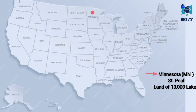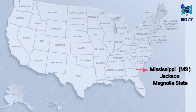Next state is Minnesota, abbreviation is MN, capital is St. Paul, its time zone is CST, and its nickname is Land of 10,000 Lakes. Next state is Mississippi, abbreviation is MS, its capital is Jackson, its time zone is CST, and its nickname is Magnolia State.